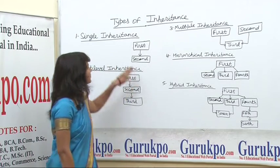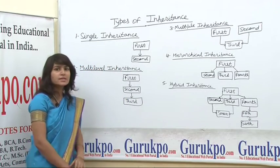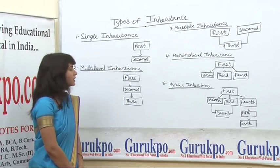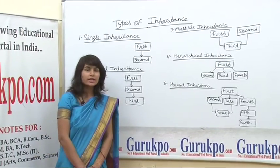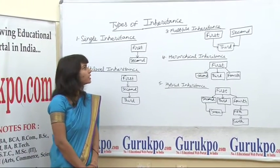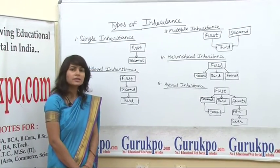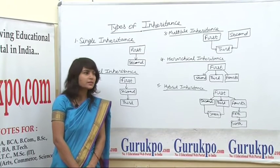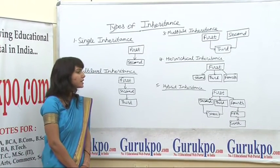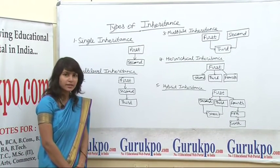There are 5 types of inheritance: first is single inheritance, second is multilevel inheritance, third is multiple inheritance, fourth is hierarchical inheritance, and last is hybrid inheritance.